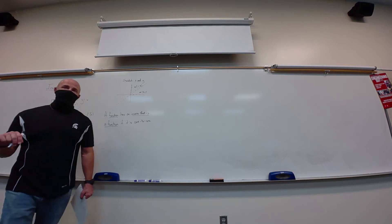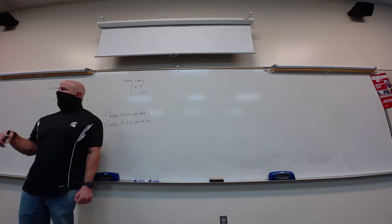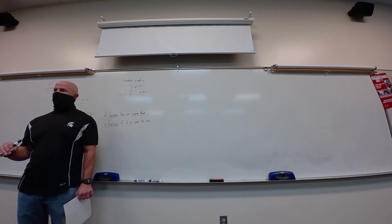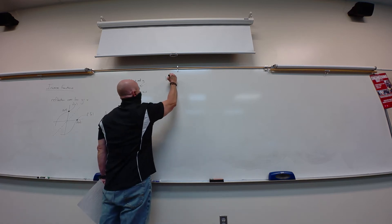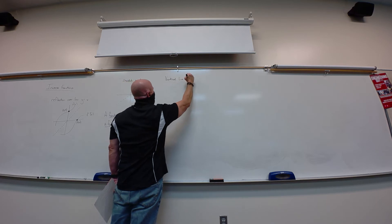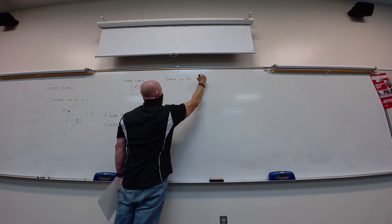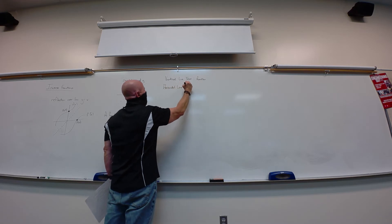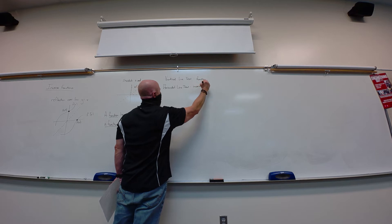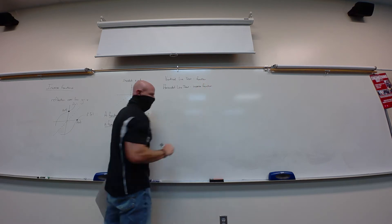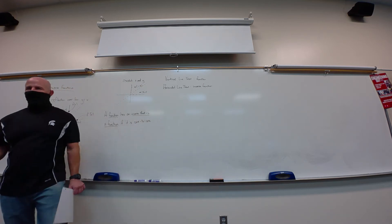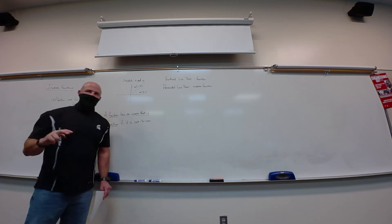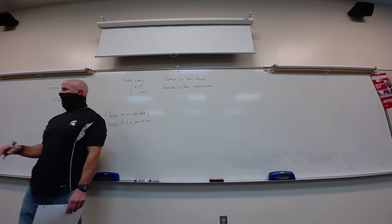To determine if something is a function, you use the vertical line test. The horizontal line test tells you if the inverse is also a function. If a graph passes both the vertical and the horizontal line test, it's a one-to-one function, meaning both the original and its inverse are functions.